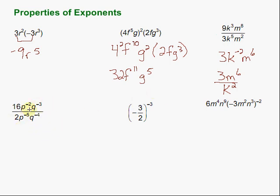Let's look at a few more examples in the second row. We start by simplifying the constant terms: 16 divided by 2 is just 8. When dividing, we subtract the exponents. We have negative 2 minus negative 5 — minus a negative is plus — so negative 2 plus 5 gives us p to the third on top. Then we have negative 3 minus negative 4, which is negative 3 plus 4, giving us q to the first — and of course we don't need to write that first power.